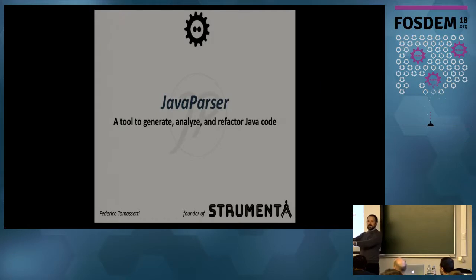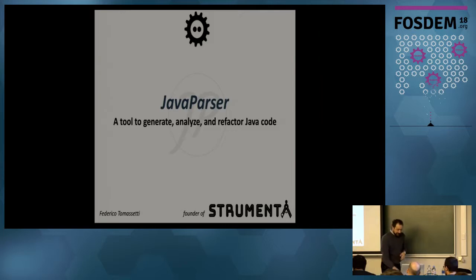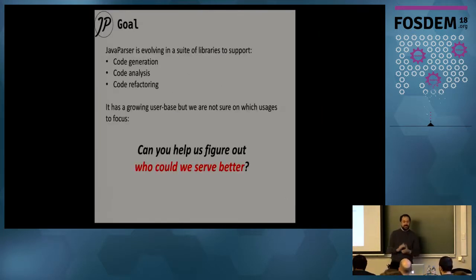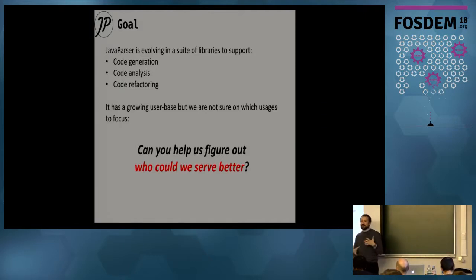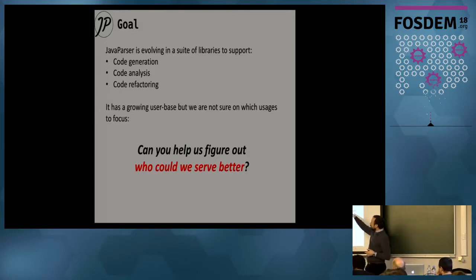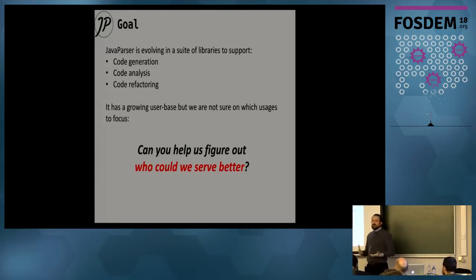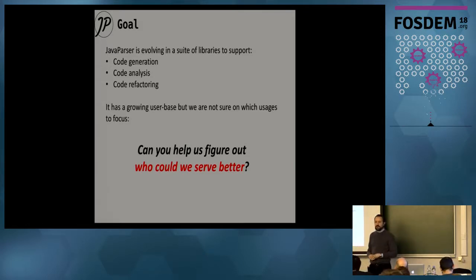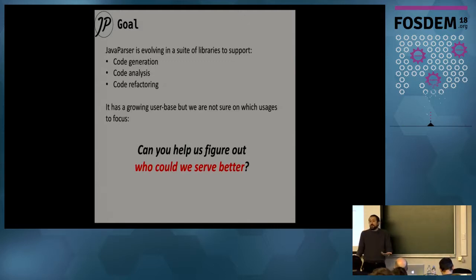We also have the maintainer on the first line, so if you have very difficult questions, ask him. JavaParser is a set of libraries that you can use for all sorts of things related to code — code generation, code analysis, and code refactoring. We have a growing user base, but we have problems getting feedback from our users to understand which kind of usages we should focus on, so we are trying to talk with the community and get feedback.